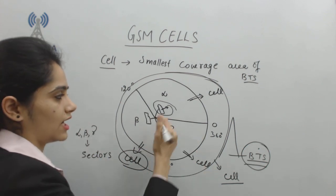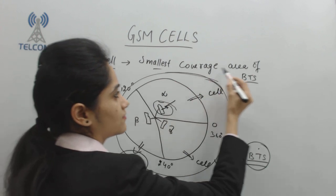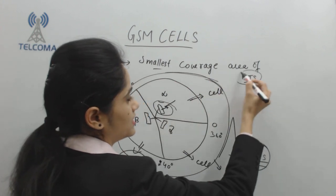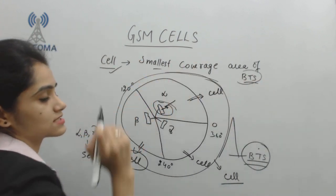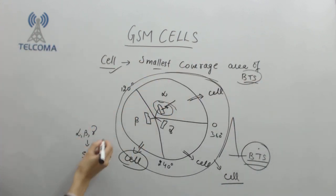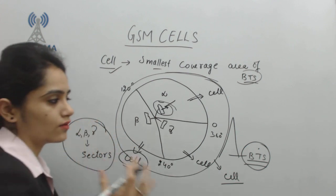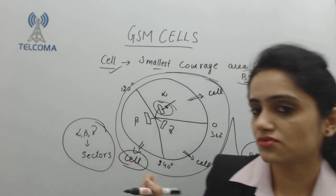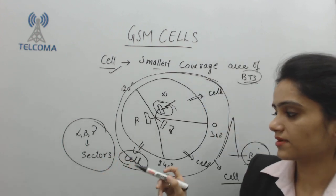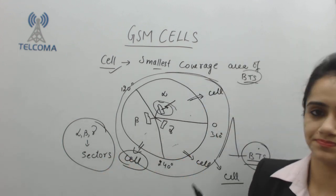The smallest coverage area of a BTS will also be called a cell. Commonly we refer to the smallest coverage area of a BTS as a cell, but in some contexts we also represent a cell with respect to a single antenna. A cell has three sectors in it at angles of 120 degrees each — Alpha, Beta, and Gamma.